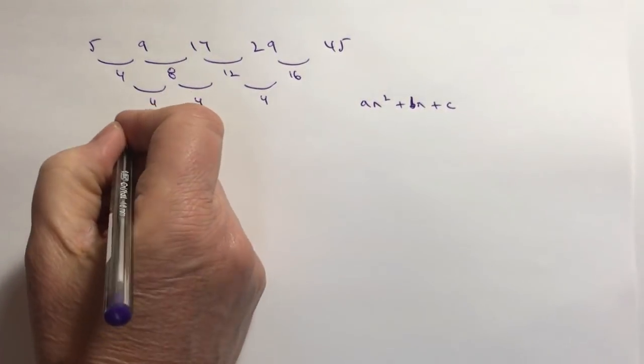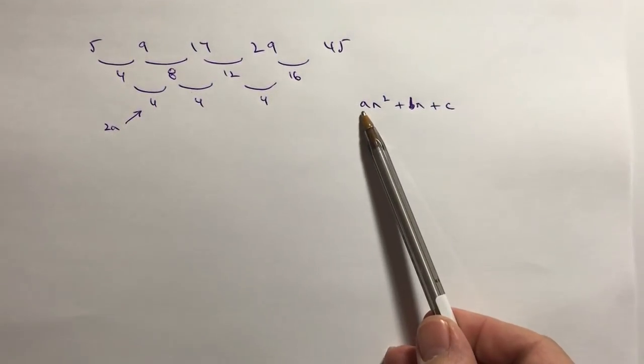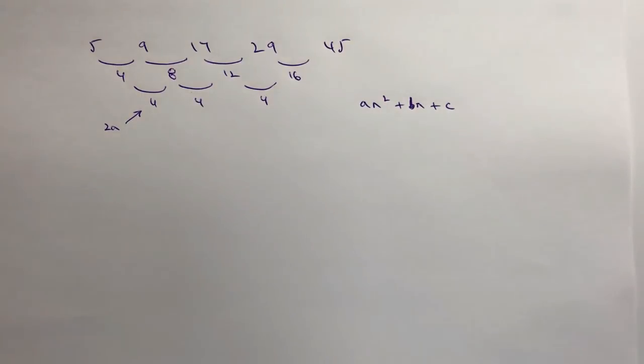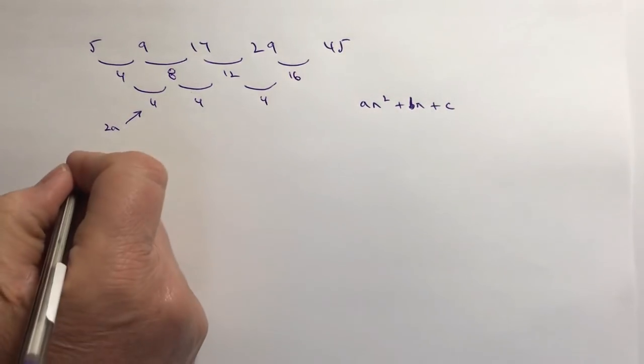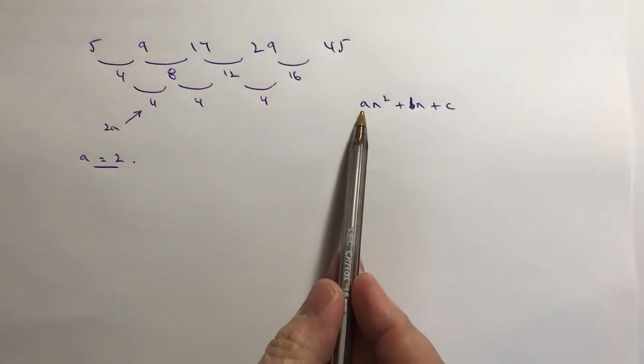Most people are aware that the second difference is actually the value of 2 times a - in other words it's double this one. So therefore using what we've got so far we can say that a equals 2, and that's the first number we're going to put in here.